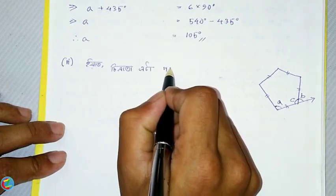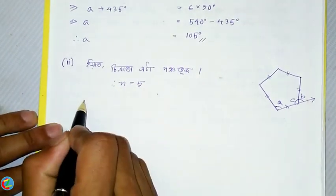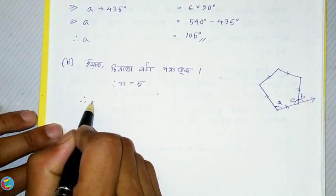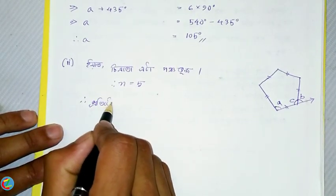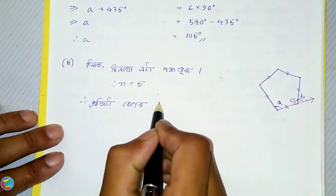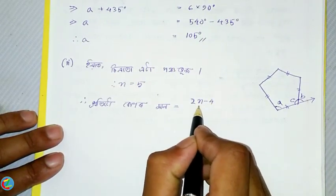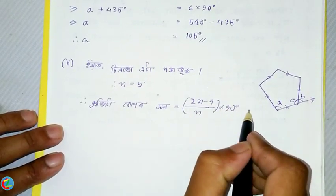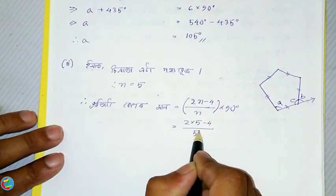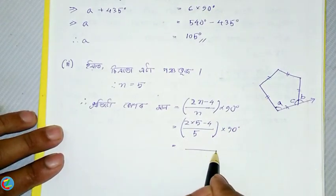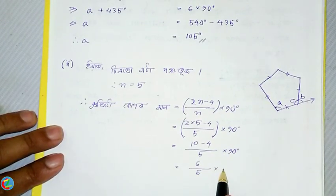We have a sample with a tab, this will be written. And then we are going to write the sample. A sample is like a sample, so we can use the sample. This is the 2-4 divided by n is equal to 90 degree. We'll take a look at 10-4 degrees, which is 5 into 90 degrees.